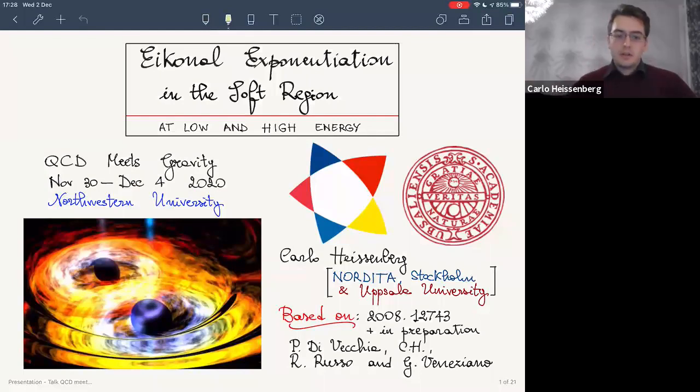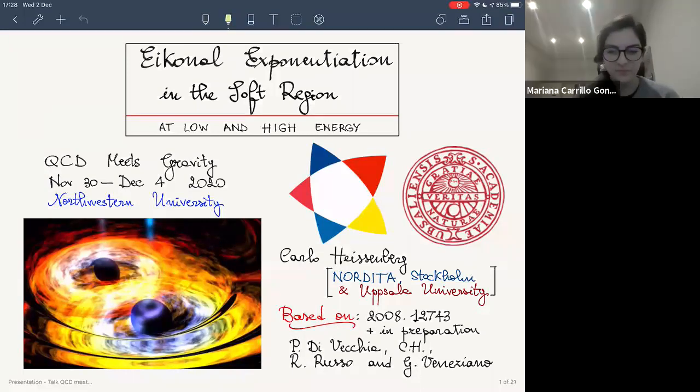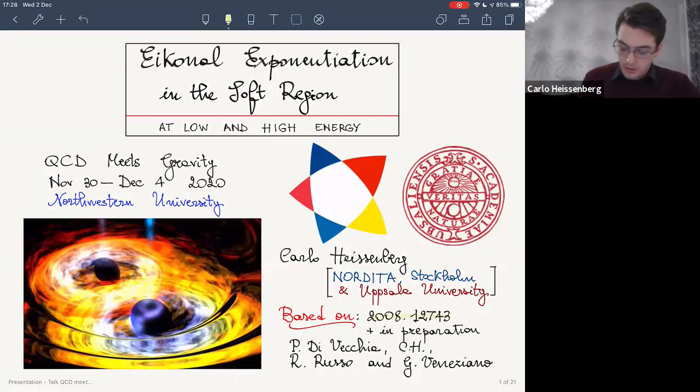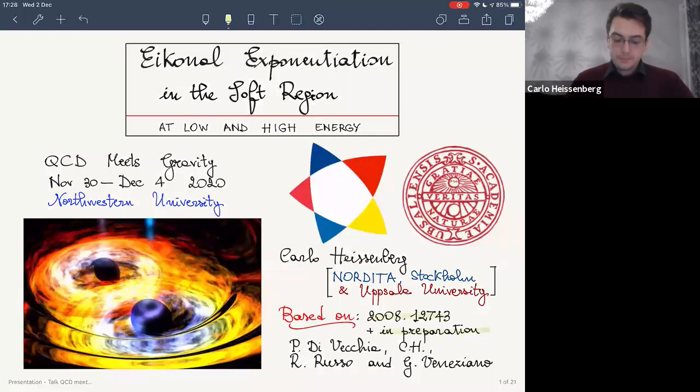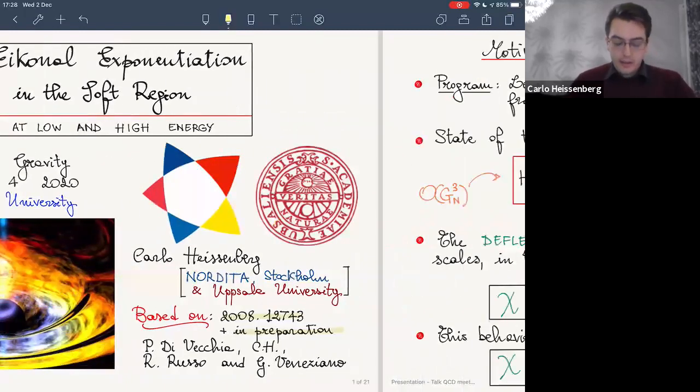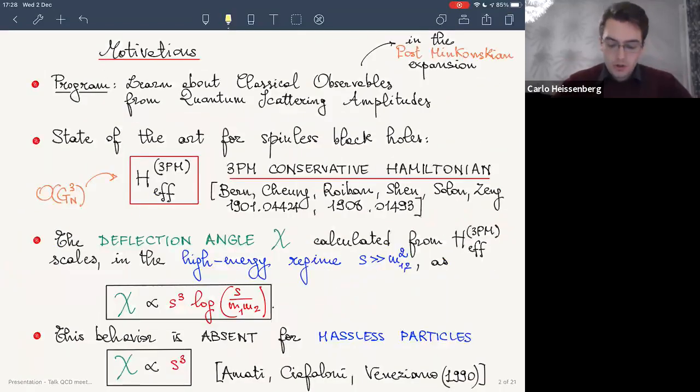Thanks, Mariana. Let me start by thanking the organizers for the opportunity to present this talk, which was based on some recent work and work in progress with Paolo Di Vecchia, Rodolfo Russo, and Gabriele Veneziano. The topic is Eikonal Exponentiation in the Soft Region at Low and High Energy. Let me begin by reviewing some of the main motivations underlying this work, which have to do with the program of learning about classical gravitational observables in the post-Minkowskian expansion by extracting information from quantum scattering amplitudes.